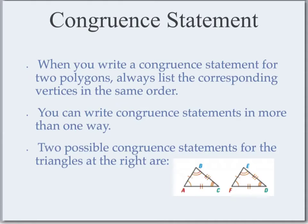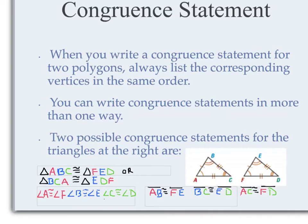Let's look at these two triangles. There are at least two possible congruent statements. Triangle ABC is congruent to triangle FED, or we could say triangle BCA is congruent to triangle EDF. Notice the vertices are labeled by color: red matches red, blue matches blue, and green matches green. You can tell by the tick marks and the arcs on the angles that angle A is congruent to angle F, angle B is congruent to angle E, and angle C is congruent to angle D — they each have the same number of arcs.